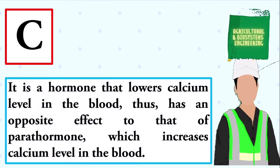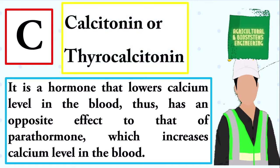It is a hormone that lowers calcium level in the blood, thus has an opposite effect to that of parathormone, which increases calcium level in the blood. The answer is calcitonin or thyrocalcitonin.